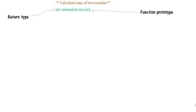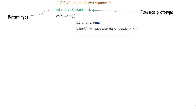You have to specify the return type — just like a `void main` method, you can define return type as void or integer. Here the return type is specified as integer. The function prototype is defined before the `void main` method — after the include statements like `stdio.h` and `conio.h`. Inside the `void main` function, I have declared some variables and a message to enter any three numbers.